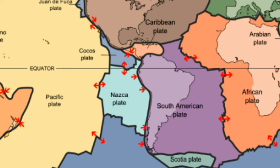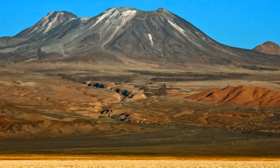An example is when the oceanic Nazca plate subducts underneath the continental South America plate. At this location, the Atacama Trench has been formed in the ocean and the volcanic mountain Lascar is located on the land.